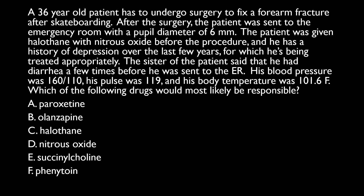A 36-year-old patient undergoes surgery to fix a forearm fracture from skateboarding. After surgery, he's sent to the ER with a pupil diameter of six millimeters — normal is two to four millimeters, so that's increased. He was given halothane with nitrous oxide before the procedure, both of which are inhaled anesthetics.